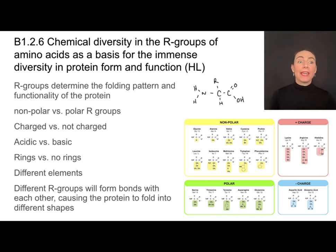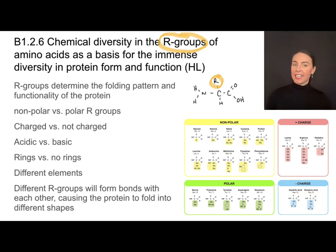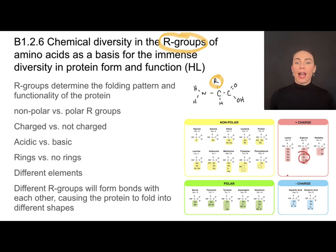Well, it's all based on the R groups. Those R groups are the functional groups that make each of the 20 amino acids different, and they can differ in a variety of ways. Some of those R groups are non-polar and some of them are polar. Some of them have a charge, and some of them don't. Some of them are acidic, some are basic, some are made out of ring structures, and some are not. They're made up of a variety of different elements, so there's a lot of chemical diversity in these R groups.